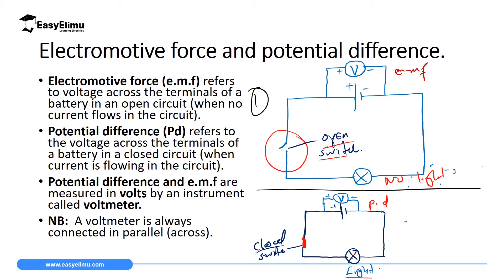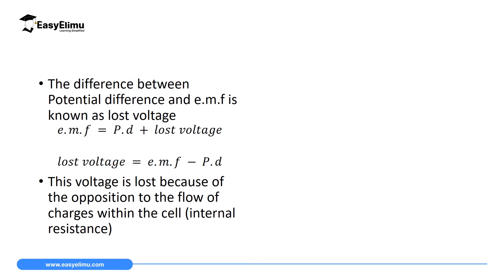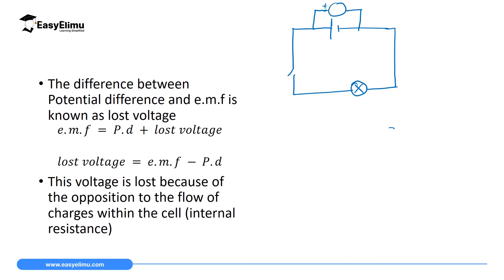Both potential difference and EMF are measured in volts, so if the voltmeter reads two, it will be two volts — that is the SI unit of voltage. The instrument which measures voltage is called a voltmeter, and in the lab it is labeled V. A voltmeter is always connected in parallel, meaning you connect the positive terminal of the device to the positive terminal of the battery, and the negative terminal of the device to the negative terminal of the battery.